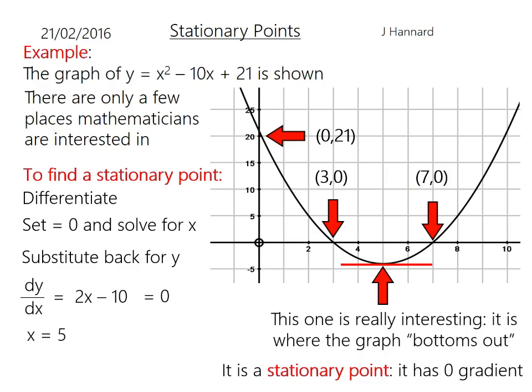Then we shove that 5 back through the original equation to find out what y-coordinate at that point and we'll get 25 minus 50 plus 21, which is minus 4. So the stationary point of that curve is 5 minus 4, right there. And that looks about right to me. If you look at the graph, that's definitely the 0.5 and that looks about right for minus 4.